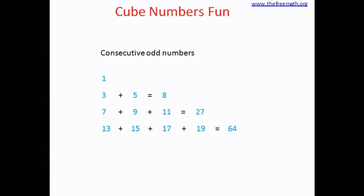Now if you look at all the additions, what do you see? The first one is 1 which is the cube of number 1. The second one is 8 and 2 cubed equals 8. The third one is 27 which is the cube of 3 and 64 is the cube of number 4.